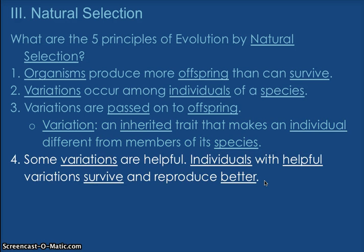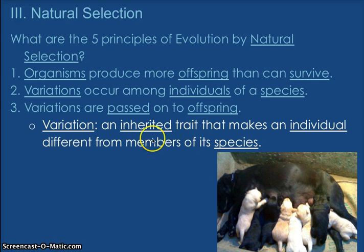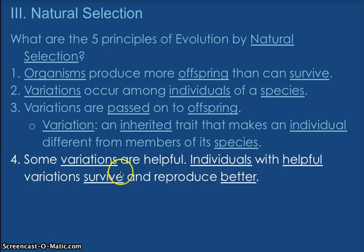The fourth principle of natural selection is that some variations are helpful, and individuals with helpful variations survive and reproduce better. Going back to this screen — if for some reason the world was a winter all around, think about which ones would actually help the organisms to survive. It would be the white ones: in a white world they would help them survive. So sometimes that inherited trait, if it's helpful, they survive better and reproduce better. The simple reason they reproduce better is the other ones have a higher chance of death because they cannot blend in with their environment.